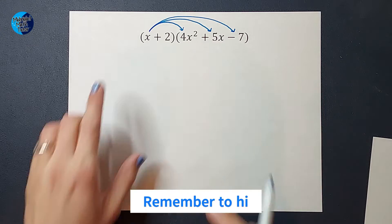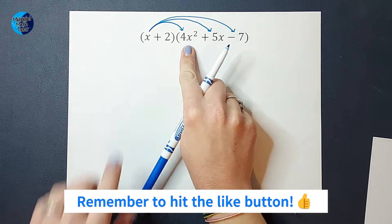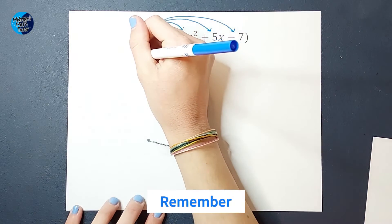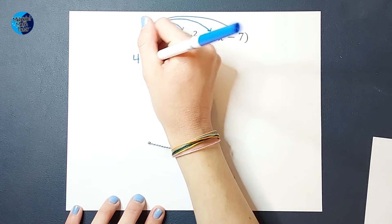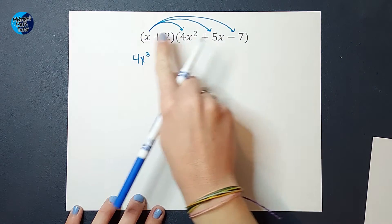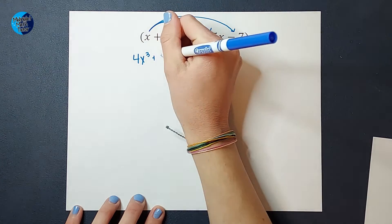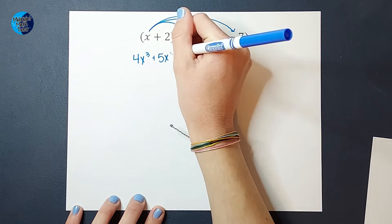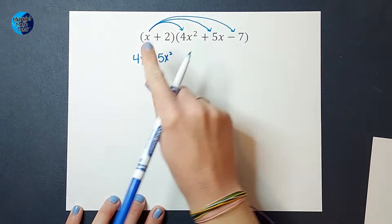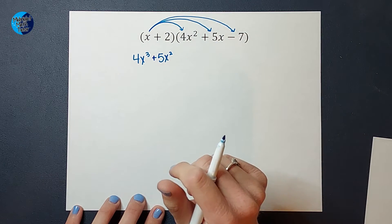So when I do that, x times 4x squared is going to give me 4x cubed. x times 5x is going to give me a positive 5x squared. x times a negative 7x.